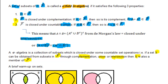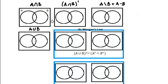So now let's start with a brief warm-up on sets. Our task here is to color-shade the set operation given above the square. Here we have A intersection B — where do the two circles intersect? Somewhere here. So that's our region of intersection.